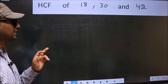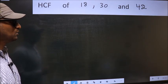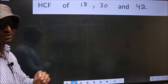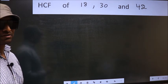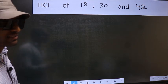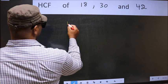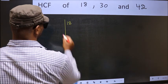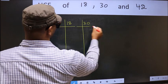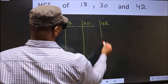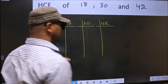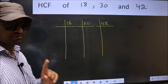HCF of 18, 30, and 42. To find the HCF, we should do the prime factorization of each number separately. We'll work on 18, 30, and 42. This is Step 1.